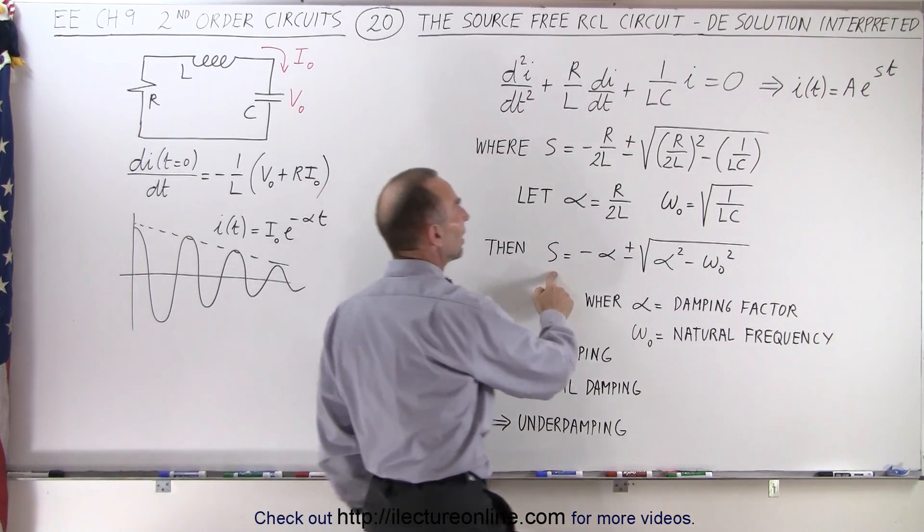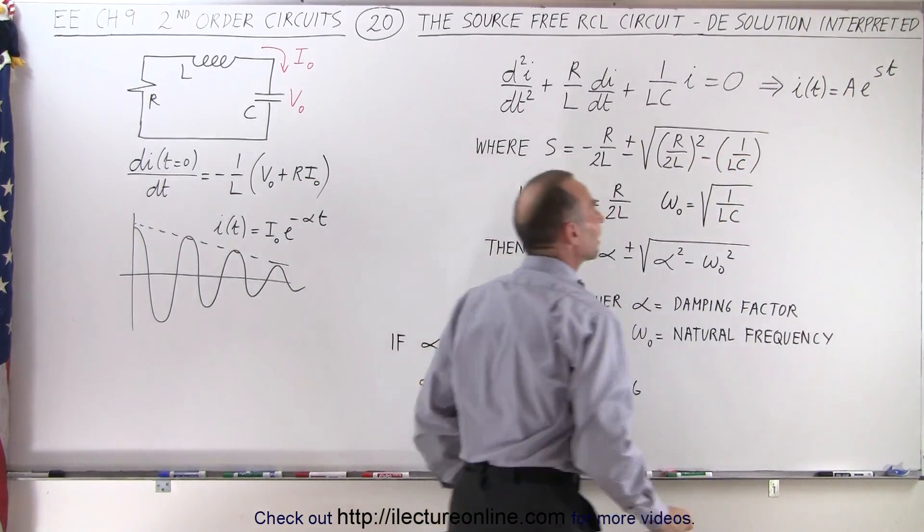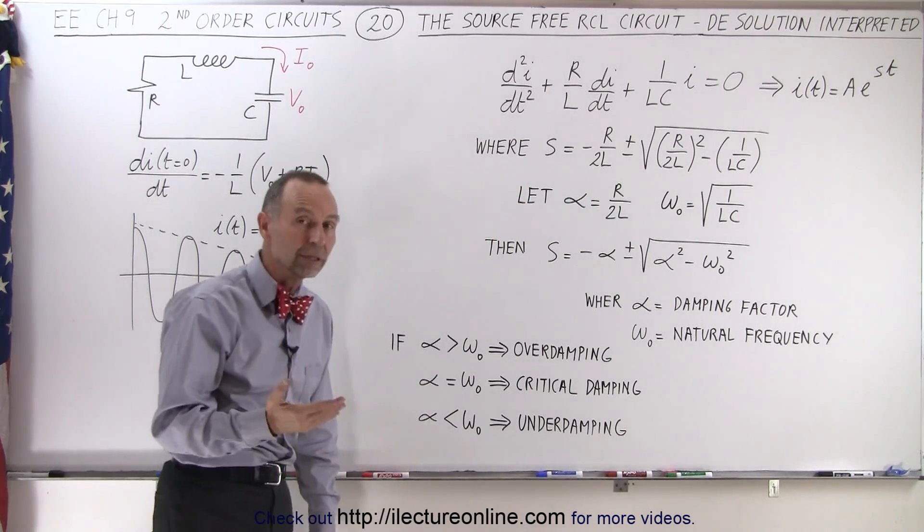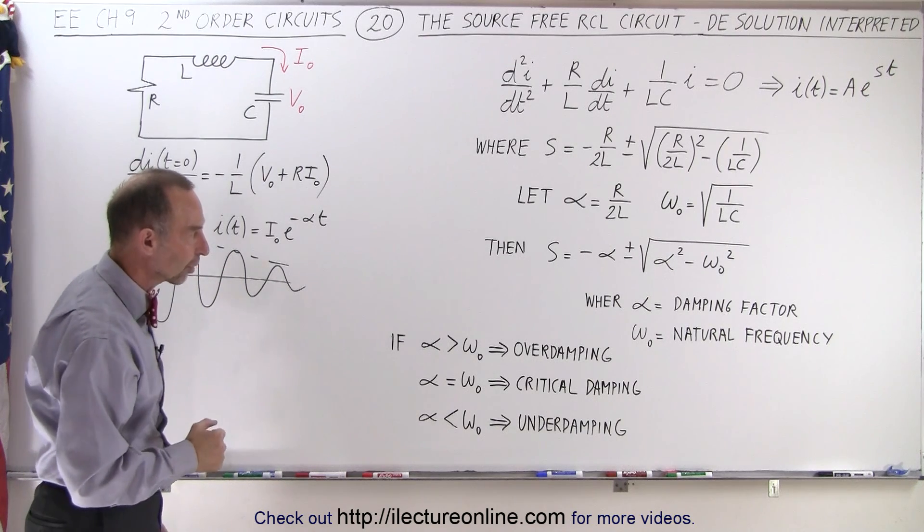Notice again that s is the variable in front of the time in the exponent, and that will determine then how quickly the oscillations come to a stop in a source-free RCL circuit.